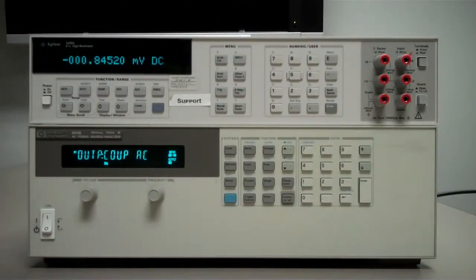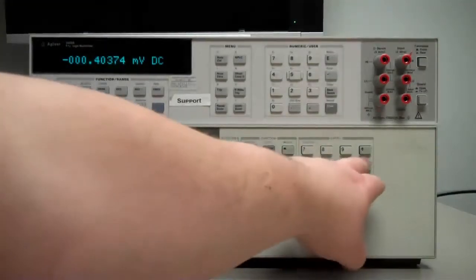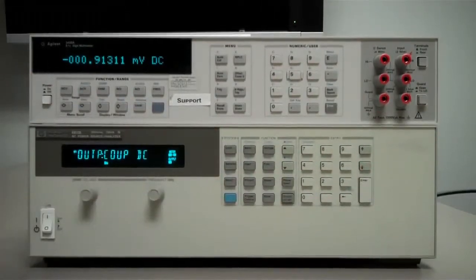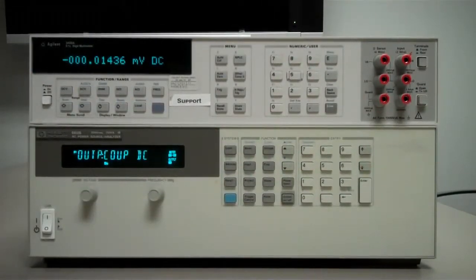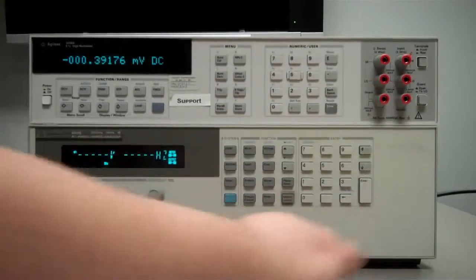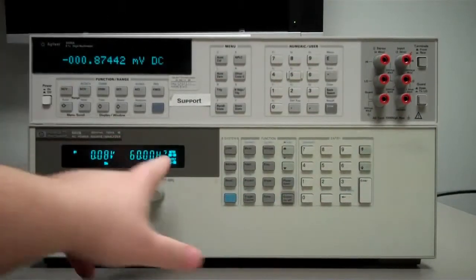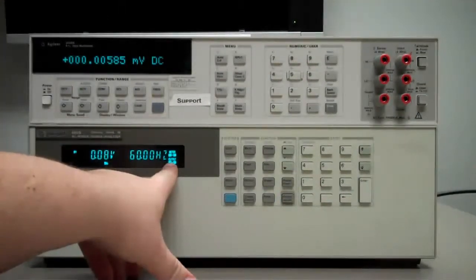The first item is what we're interested in. It's output couple AC right now. We're going to use these arrow keys all the way to the right and scroll down until it says output couple DC. Now hit the enter key. Now if you look here, the output is set to AC plus DC.